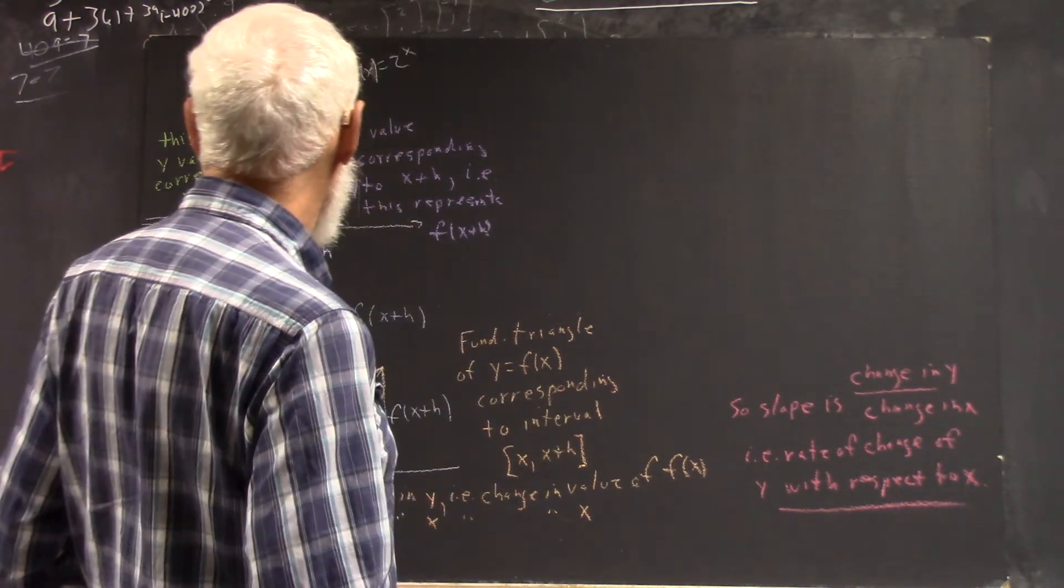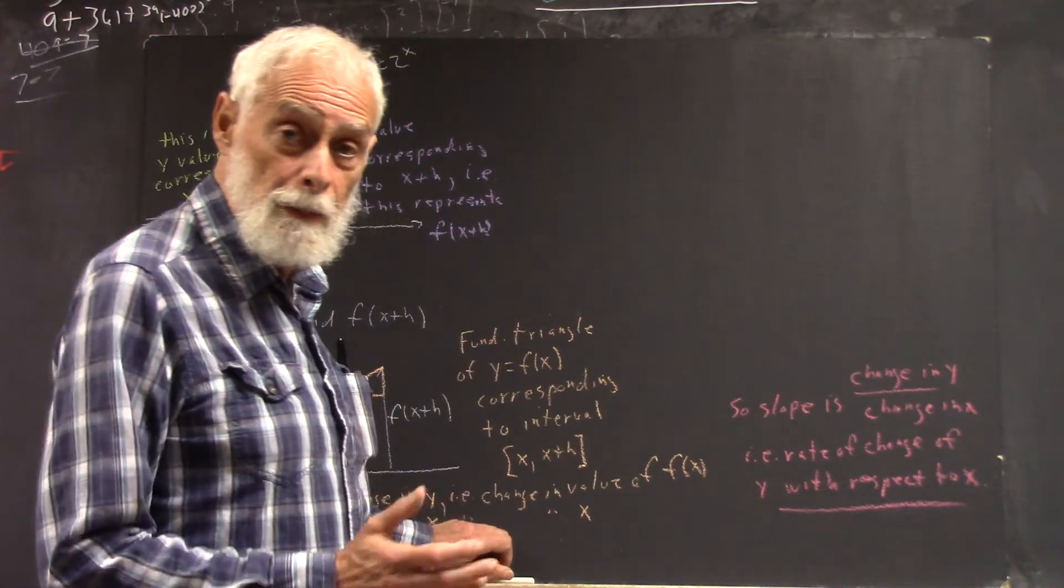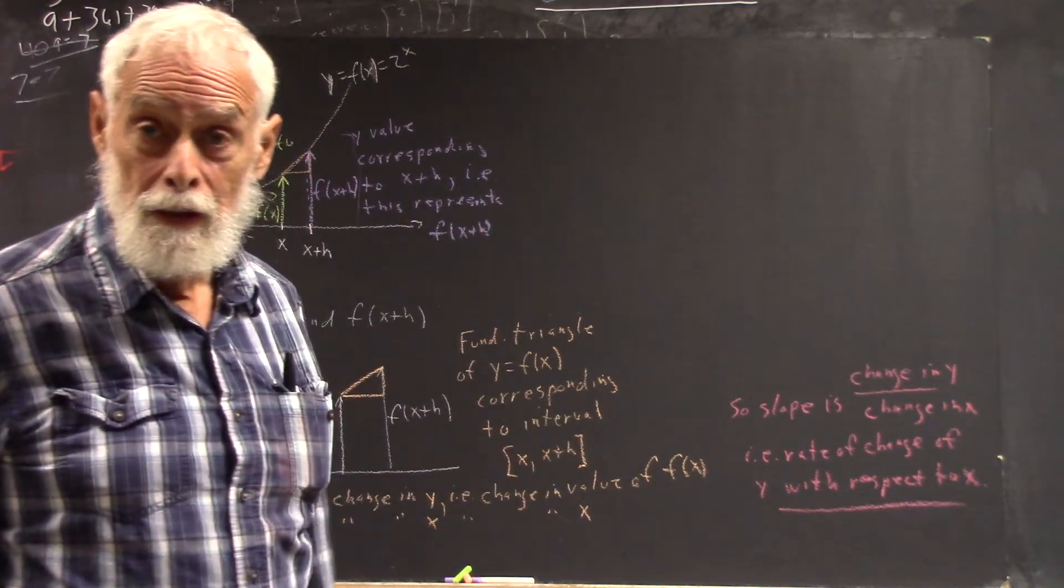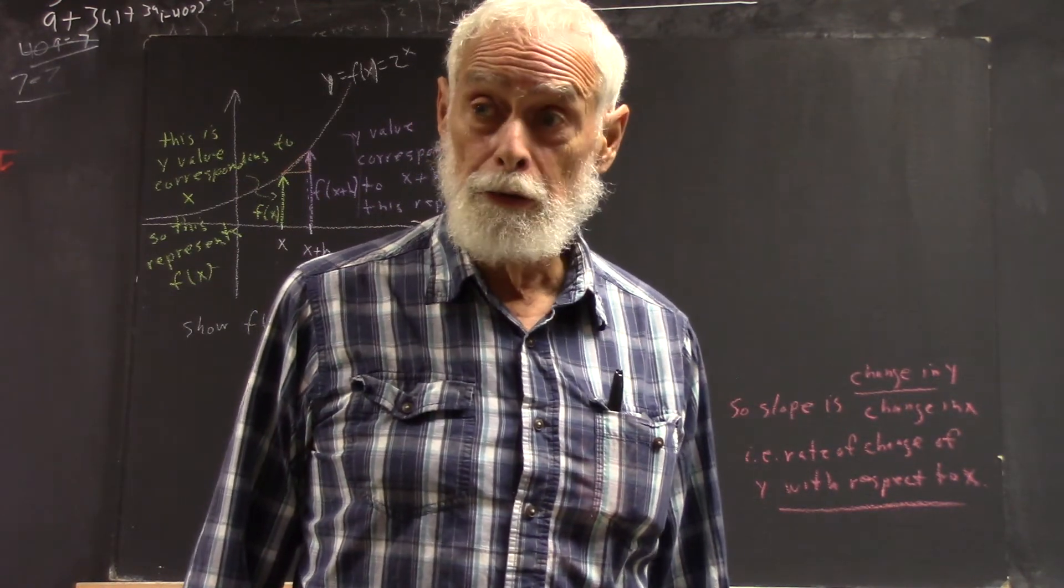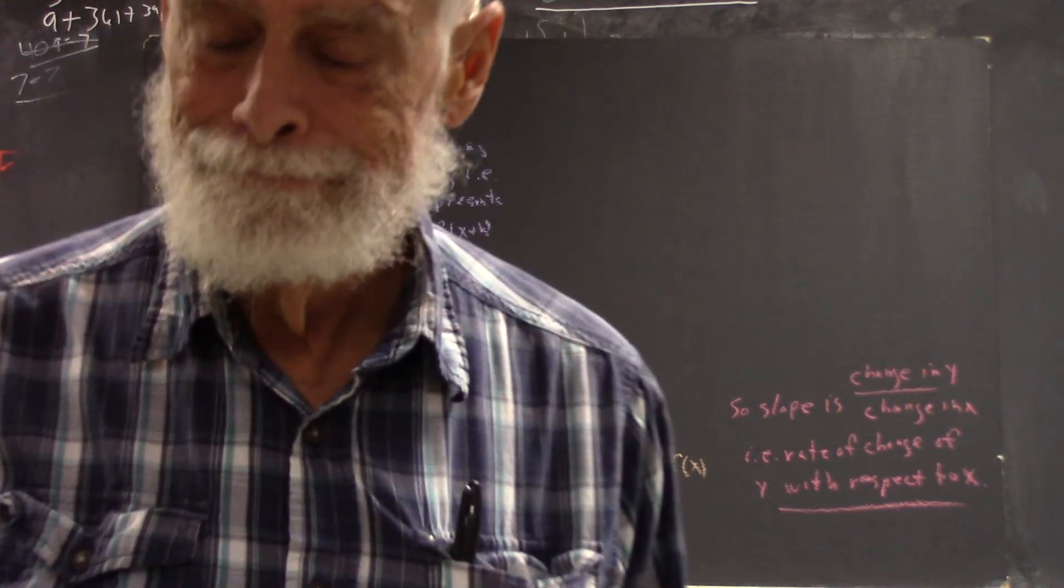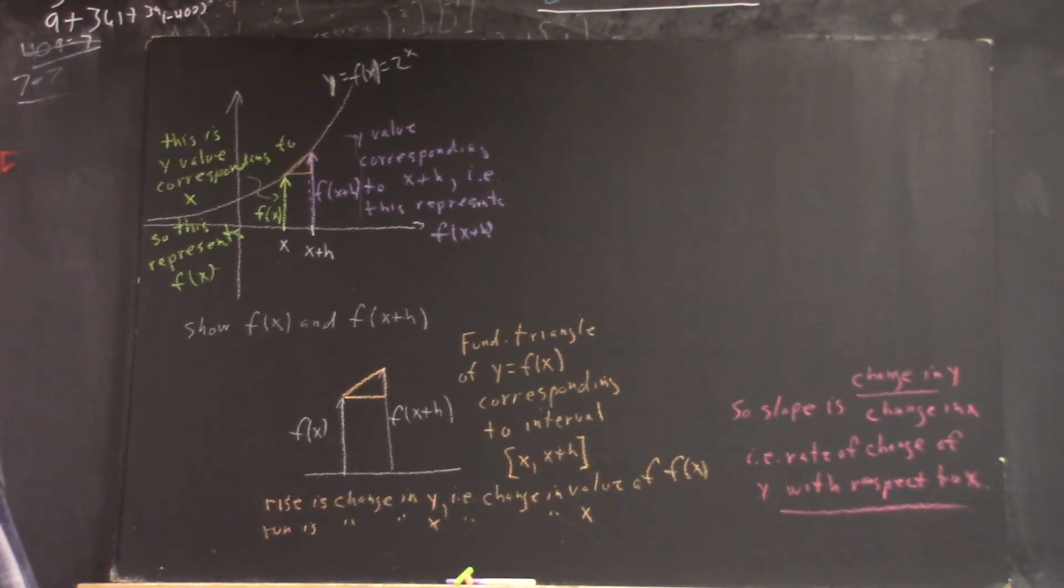This, well, no expression isn't here. That expression, F of X plus H minus F of X over H, is called the difference quotient. It's the beginning of wisdom in a calculus course. It's the foundation. Thank you. Thanks, everyone.